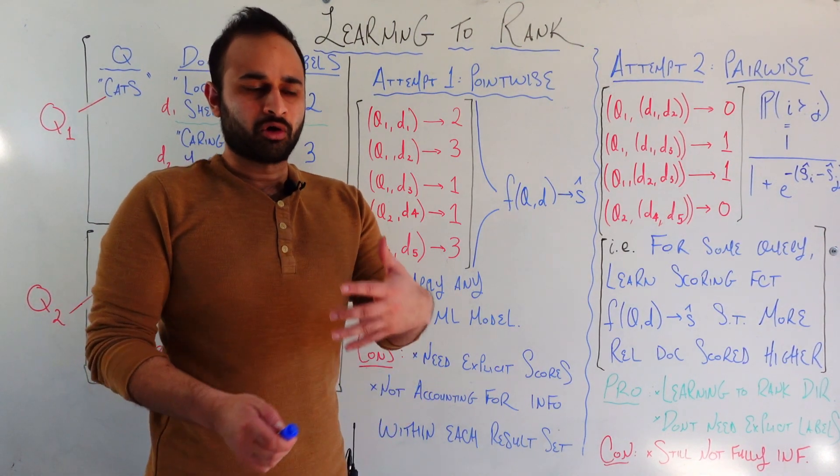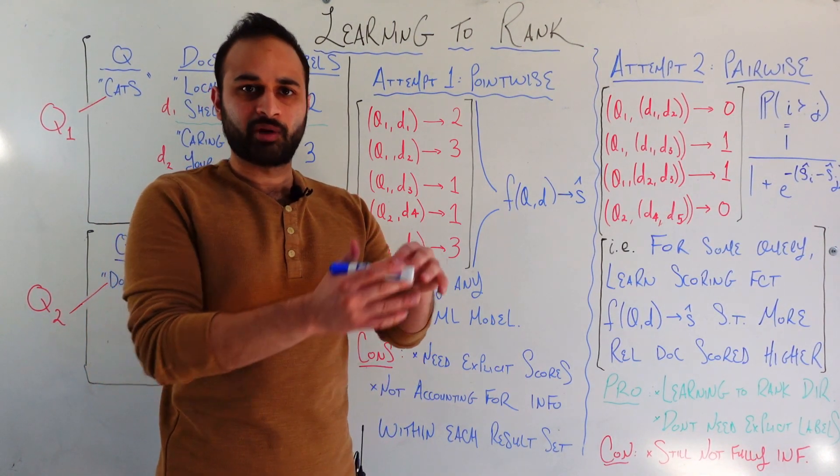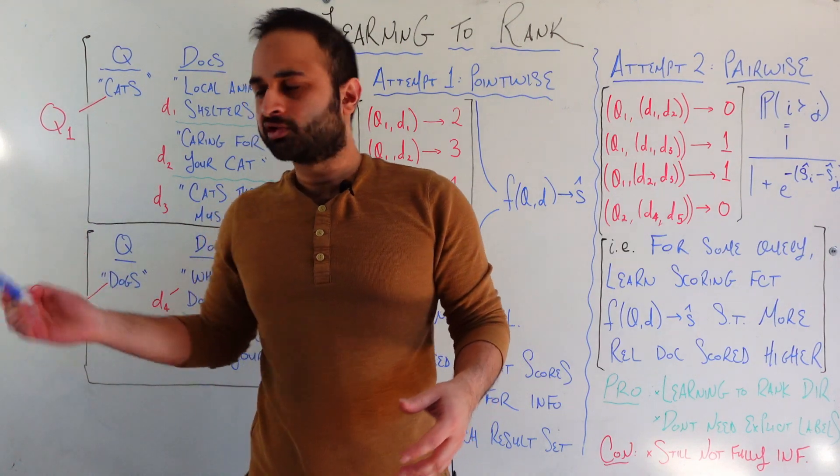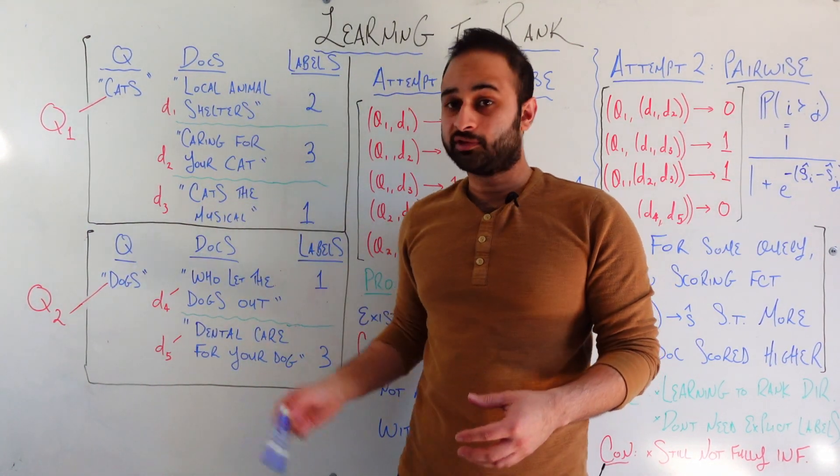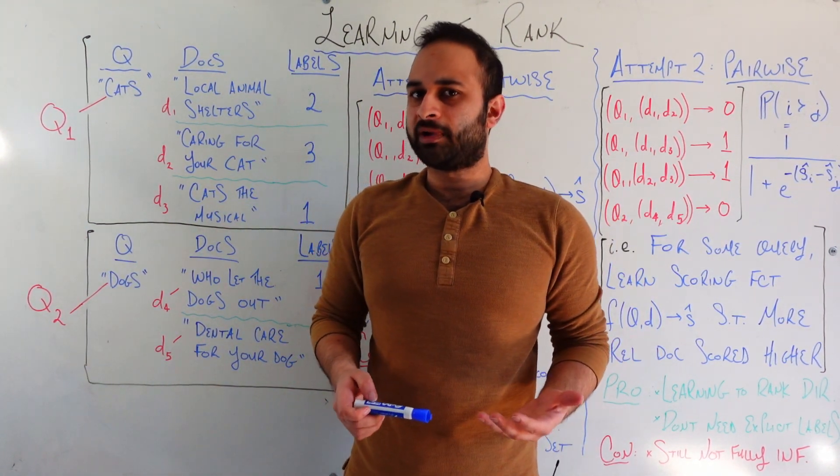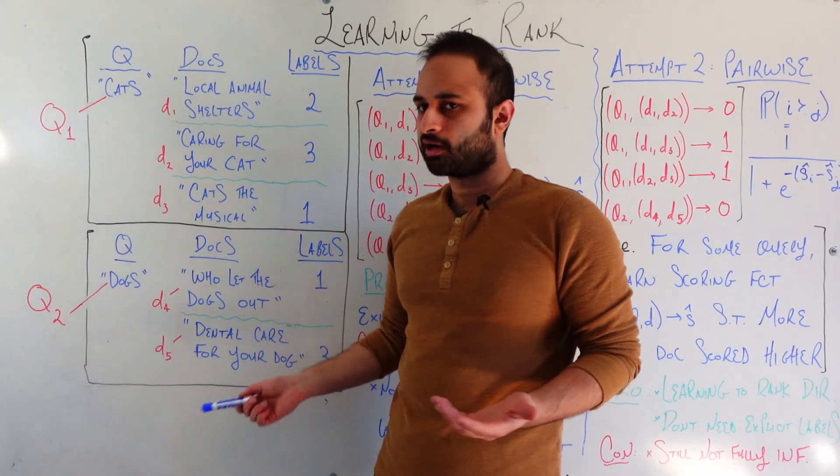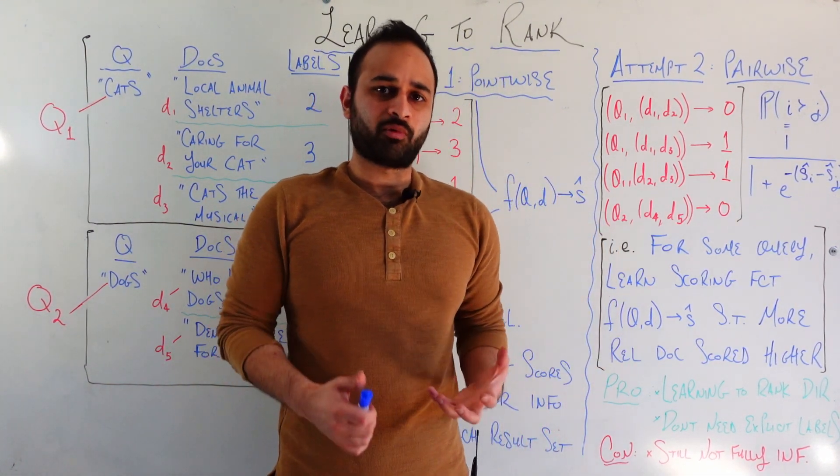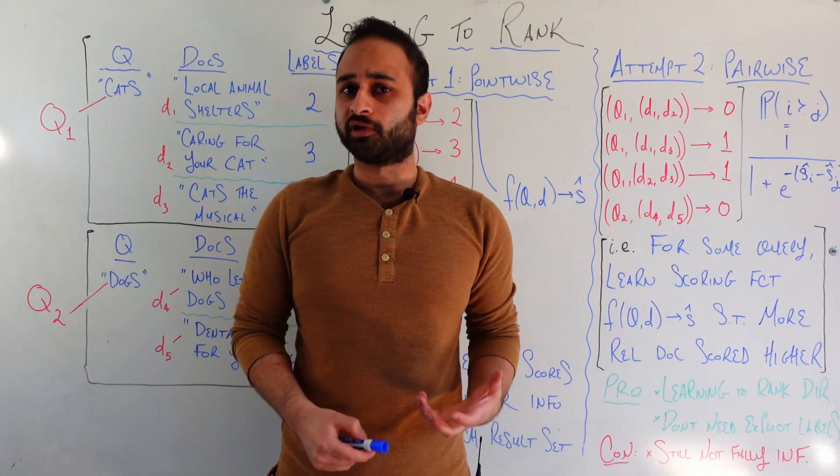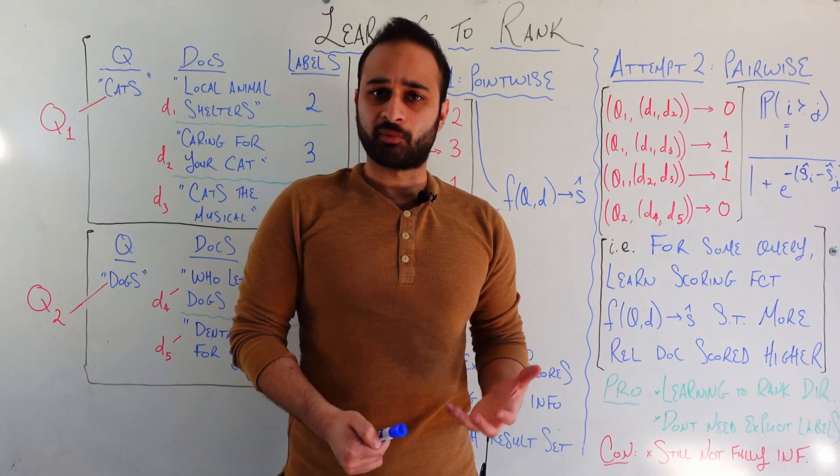Because when you search for something, you're only really worried about the searches that are showing up right now. If you search for cats, you're very interested in these three results and the ordering of them. You're less worried about what could have showed up if you search for dogs. So that's why this point-wise model is not strong for learning to rank, but it is a good starting point.